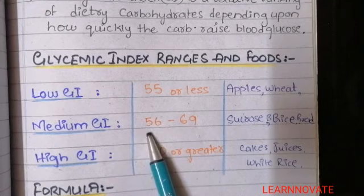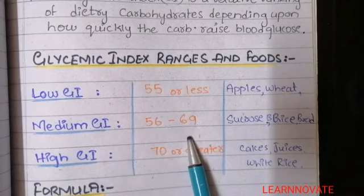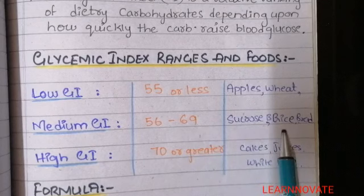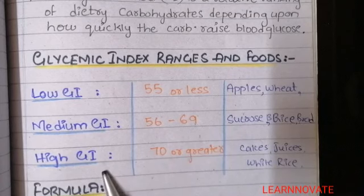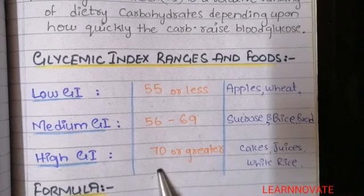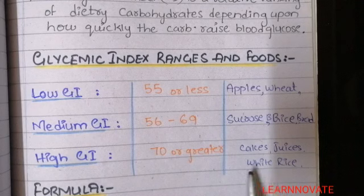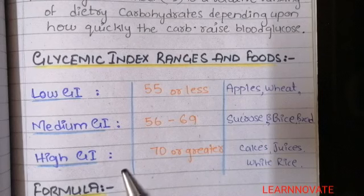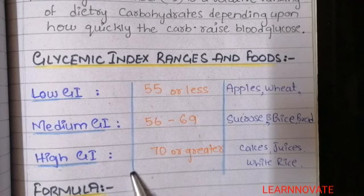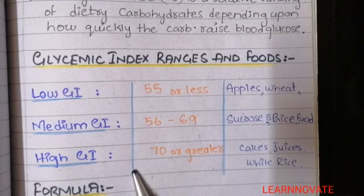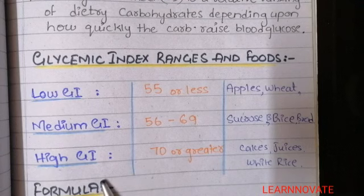The medium glycemic index range is 56 to 69, and foods in this range include sucrose, brown rice, and bread. The high glycemic index foods contain a glycemic index greater than 70 — these are cakes, chocolates, dairy products, juices, and white rice. We should eat these foods with caution or avoid them, because high glycemic index is related to certain health risk factors including type 2 diabetes. Fluctuation of blood glucose and increased release of insulin may lead to type 2 diabetes or other chronic conditions.